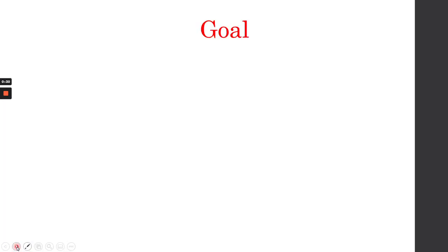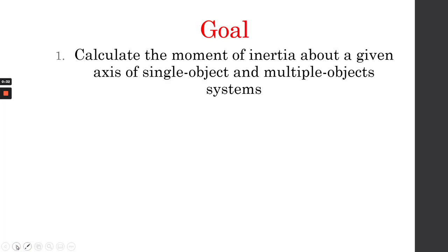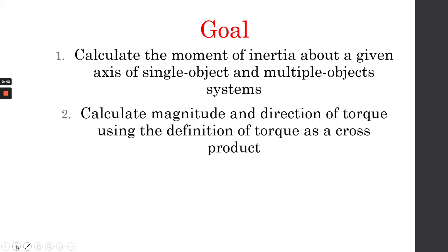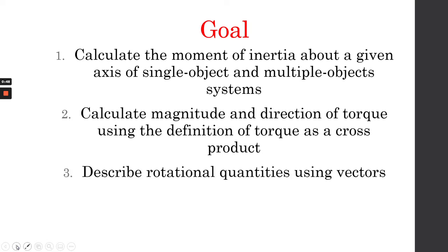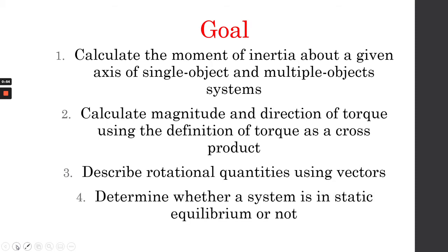Let's talk about the goals of this lesson. You should be able to calculate the moment of inertia about a given axis of a single object and multiple objects in systems. Also calculate the magnitude and direction of torque using the definition of torque as a cross product. Also be able to describe the rotational quantities using vectors, and lastly determine whether a system is in static equilibrium or not.